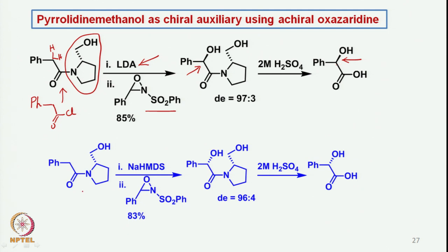On the other hand, if the same substrate is taken with sodium hexamethyldisilazide (NaHMDS) as the base, it deprotonates again in a similar fashion but introduces the oxygen in a different way compared to lithium diisopropylamide (LDA). In both cases the diastereomeric ratio is very high — 97:3 and 96:4 — and the yield is also fairly good.